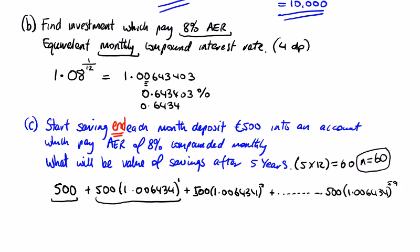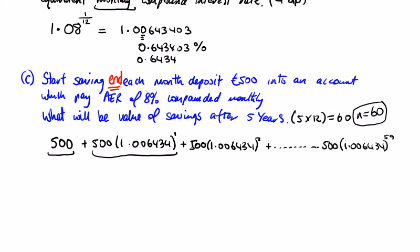We can see this is a geometric sequence like the previous question. So a is equal to 500, my ratio r is 1.006434, and my n is equal to 60. So always set these up as a geometric sequence and then just use your calculator after you fill it in.